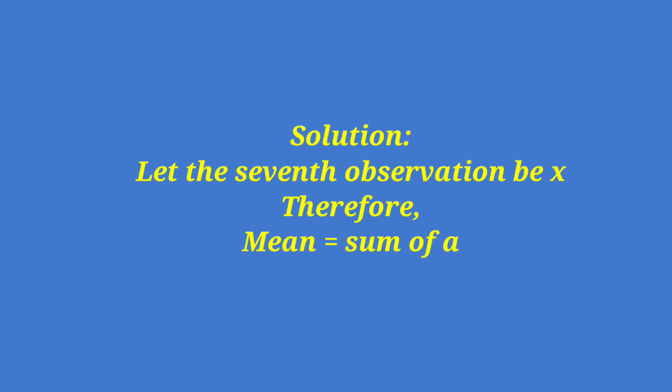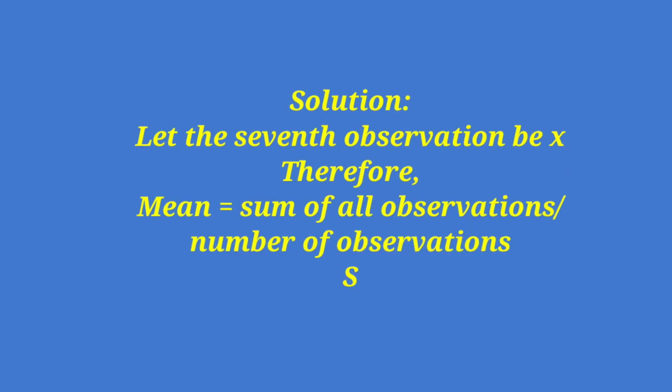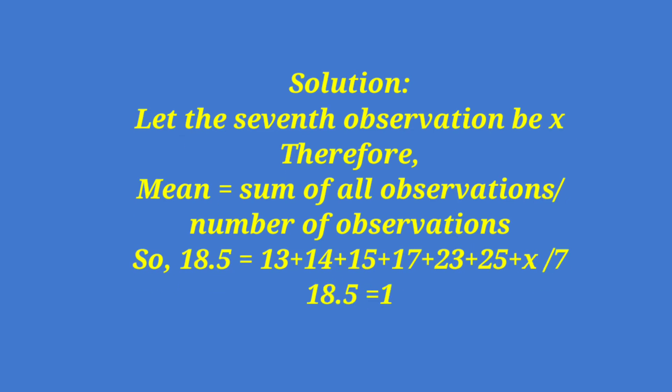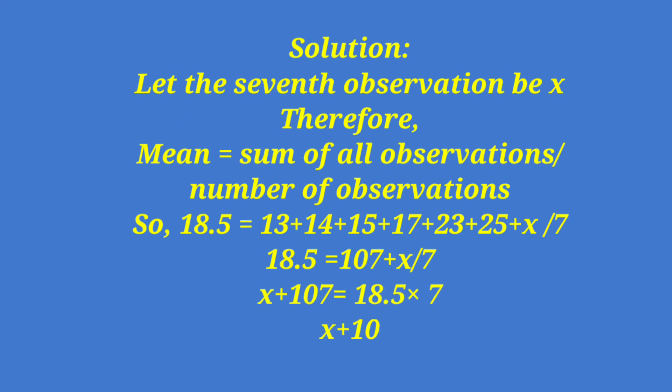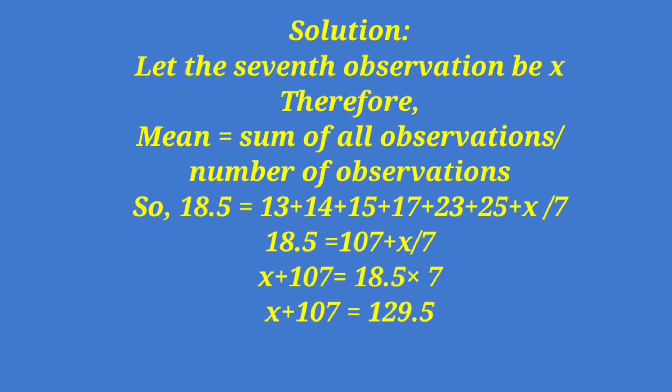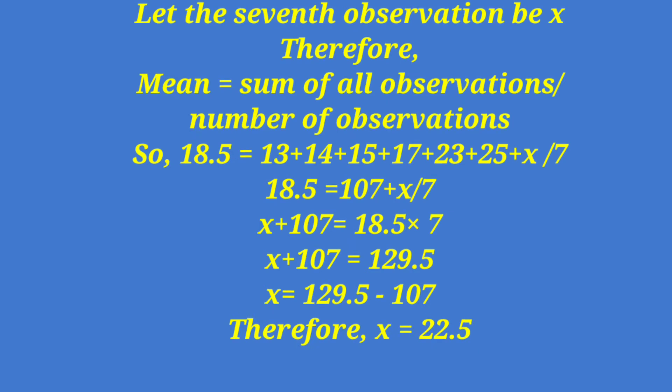The solution: Let the seventh observation be x. We are using the algebraic method here. Therefore, mean equals sum of all observations divided by number of observations. We put this in simple equation format: 18.5 equals 13 plus 14 plus 15 plus 17 plus 23 plus 25 plus x, all divided by 7.